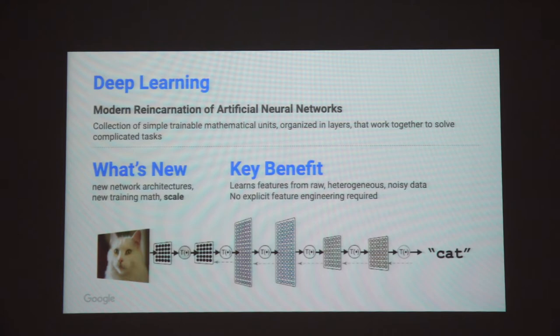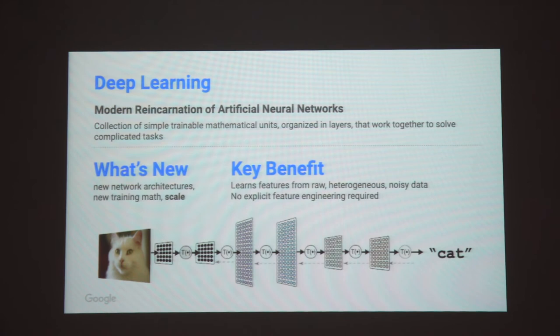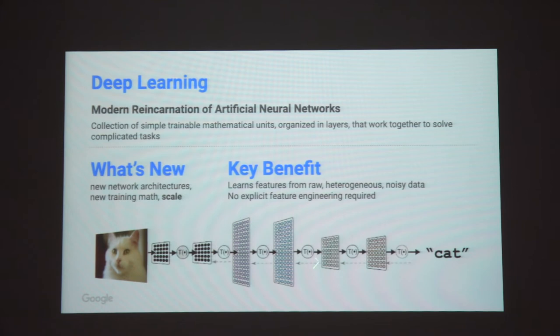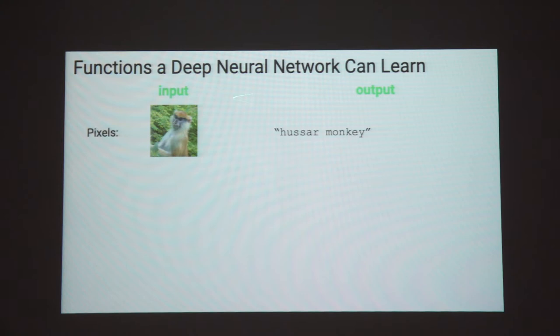Typically you have some labeled data, you learn a predicted function close to the true function, and you refer to the difference as the loss function. You take the derivative of that loss function with respect to all the weights and try to make it zero. Using the chain rule of calculus, Jeff Hinton came up with backpropagation, through which you learn the values of these weights. Deep neural networks have been able to learn functions for image classification, speech to text, and machine translation.